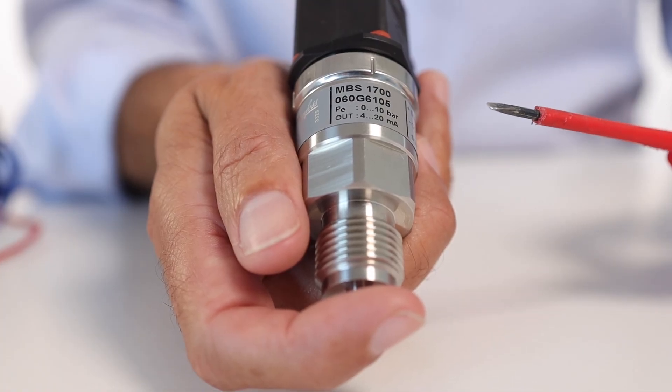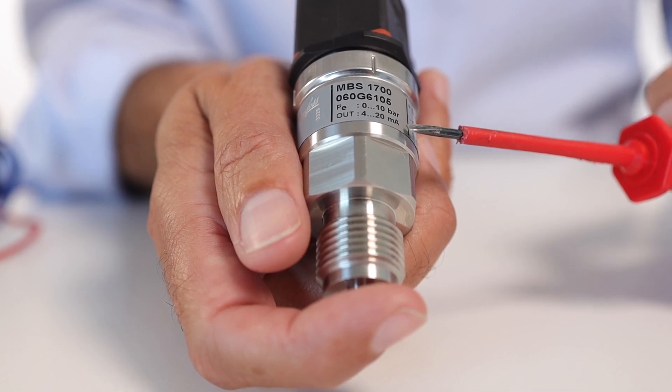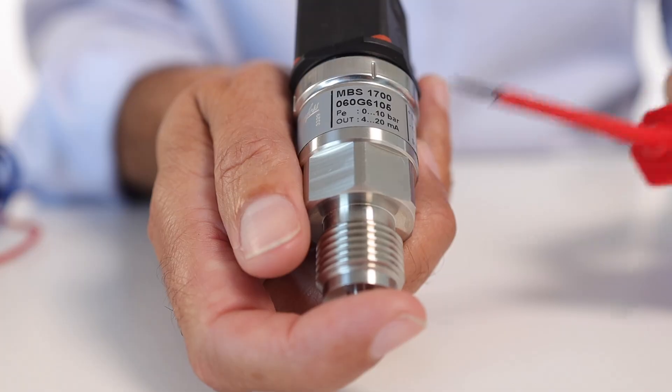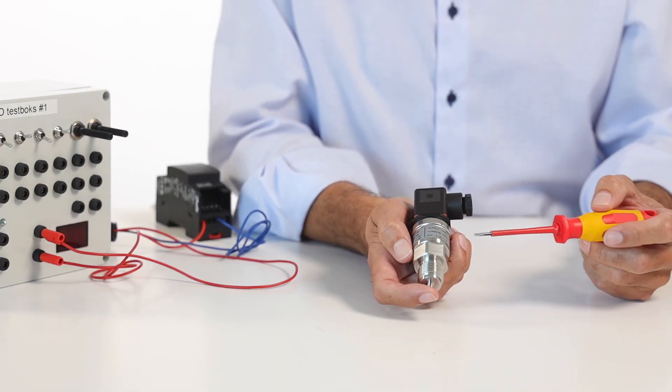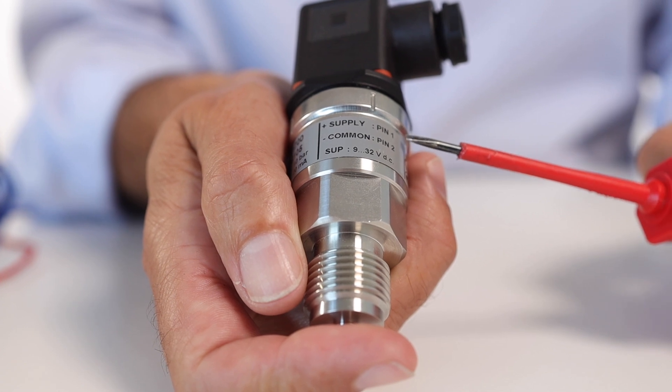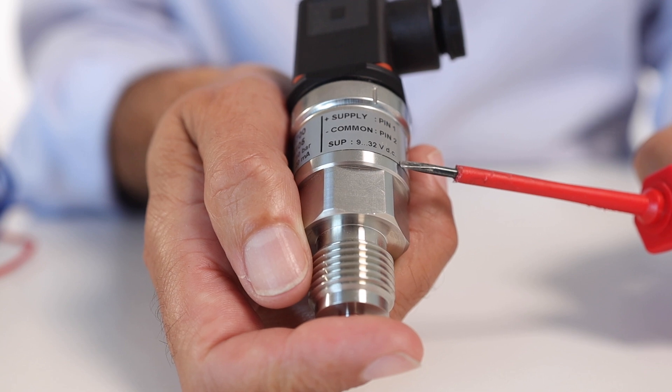On the label on the pressure transmitter, you can see that the pressure range goes from 0 to 10 bar and the output signal is 4 to 20 milliamps. You can also see that plus should be connected to pin 1 and minus to pin 2, and that the supply voltage goes from 9 to 32 volt DC.